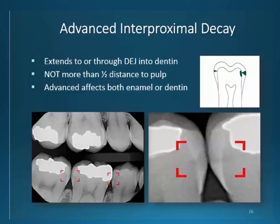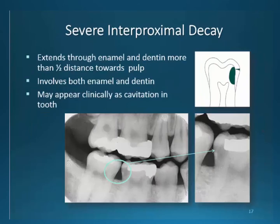Advanced interproximal decay extends through the dentin enamel junction but not more than halfway towards the pulp. At this point, both the dentin and enamel are involved in tooth destruction. Severe interproximal decay extends past the midline of the dentin towards the pulp and may have invaded the tooth pulp. This type of decay may lead to more aggressive dental restorations and fillings.